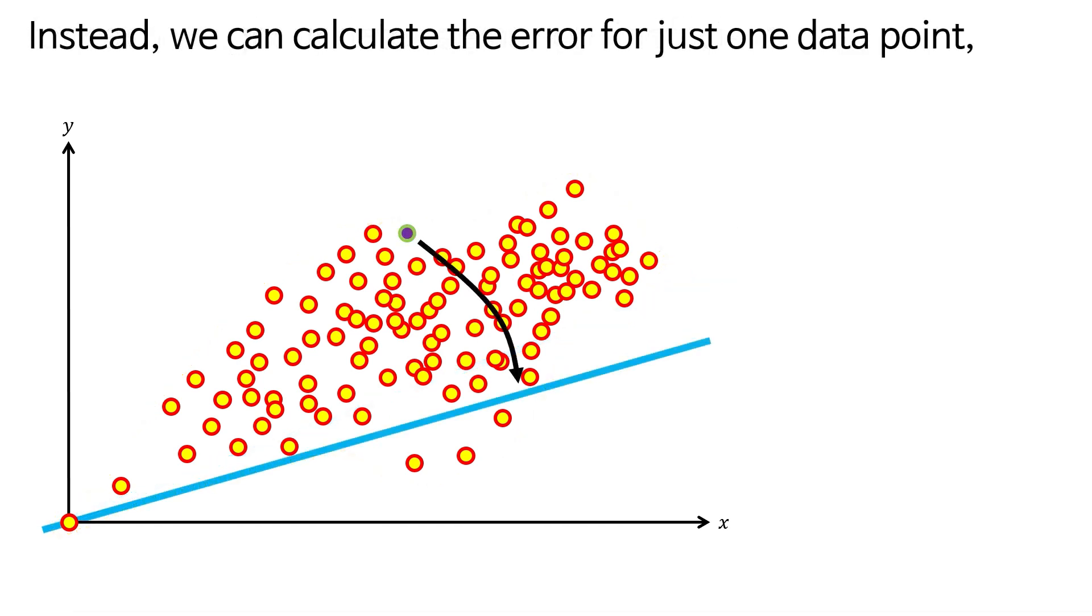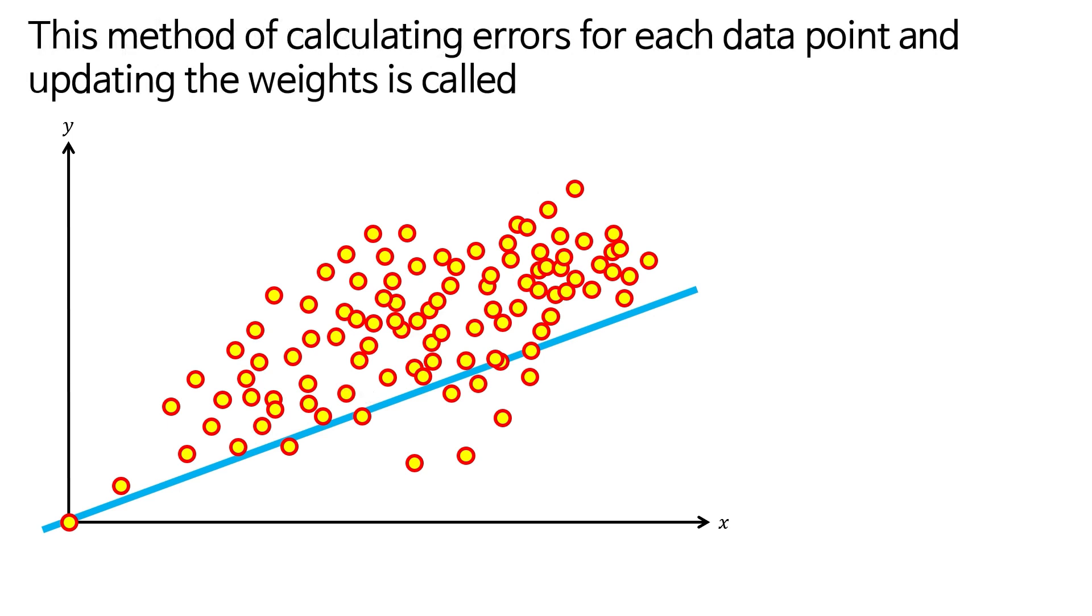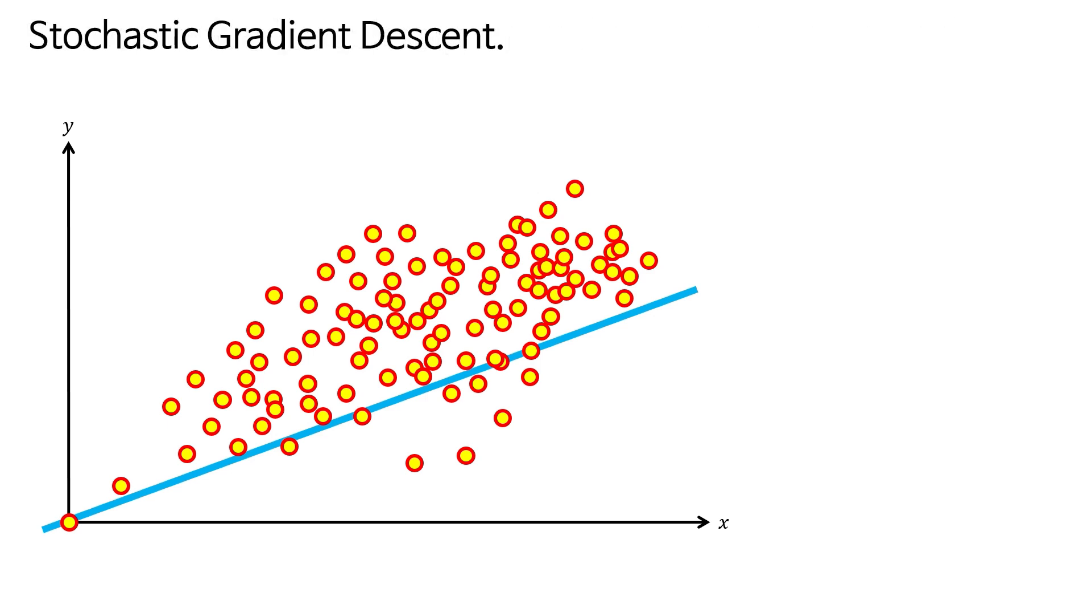Instead, we can calculate the error for just one data point, update the weight, then calculate the error for another data point, and update the weight again. This method of calculating errors for each data point is called stochastic gradient descent.